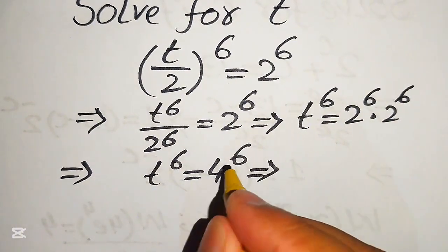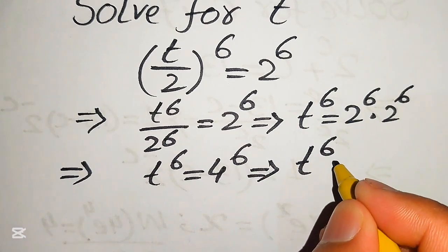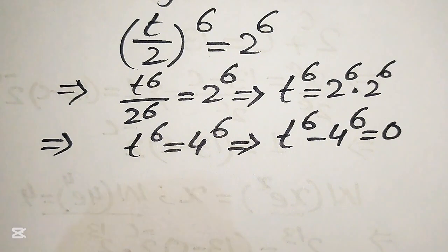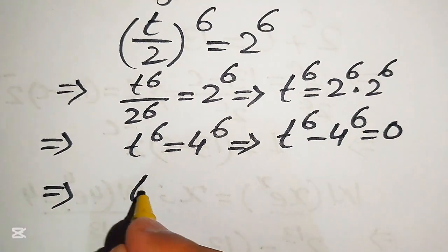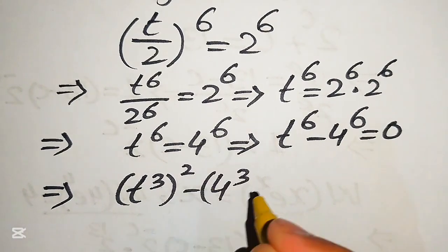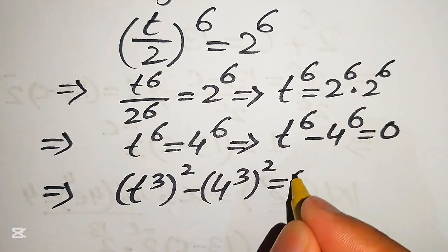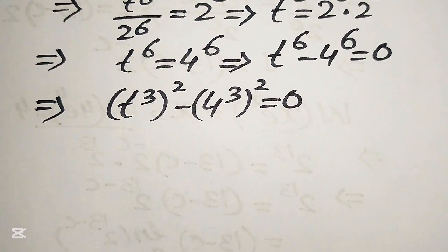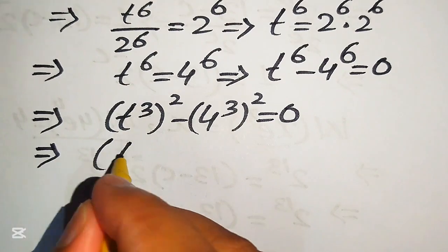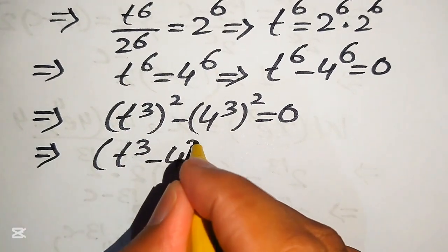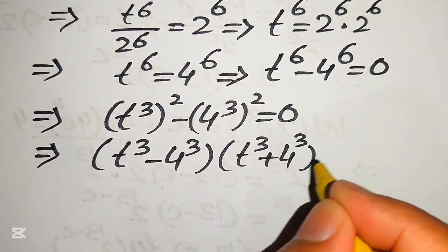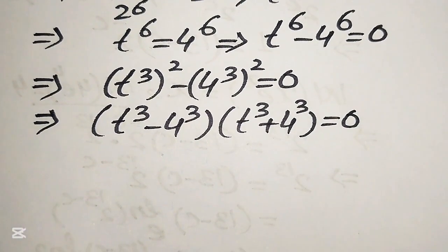We move 4^6 to the left-hand side and it becomes t^6 minus 4^6 equals 0. We rewrite this equation as (t³)² minus (4³)² equals 0, and then apply the algebraic difference-of-squares formula to write it as (t³ minus 4³)(t³ plus 4³) equals 0.